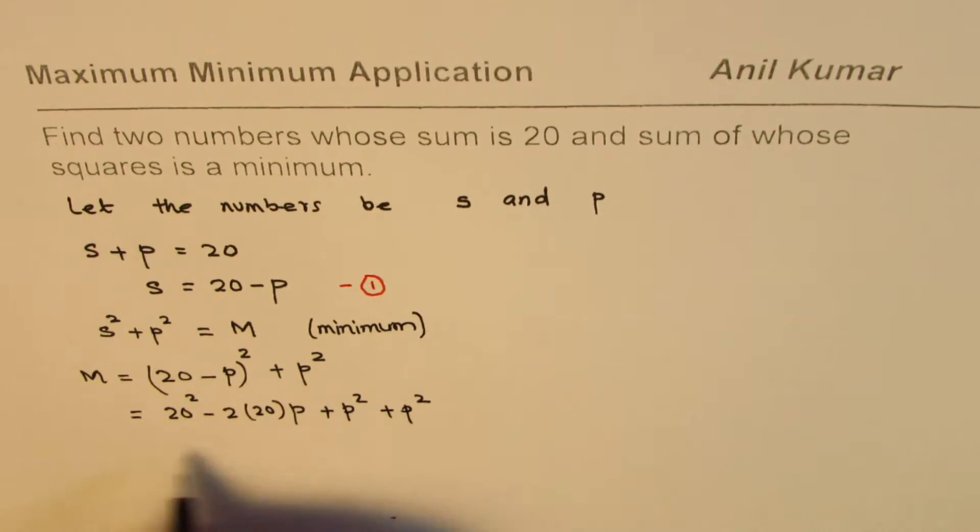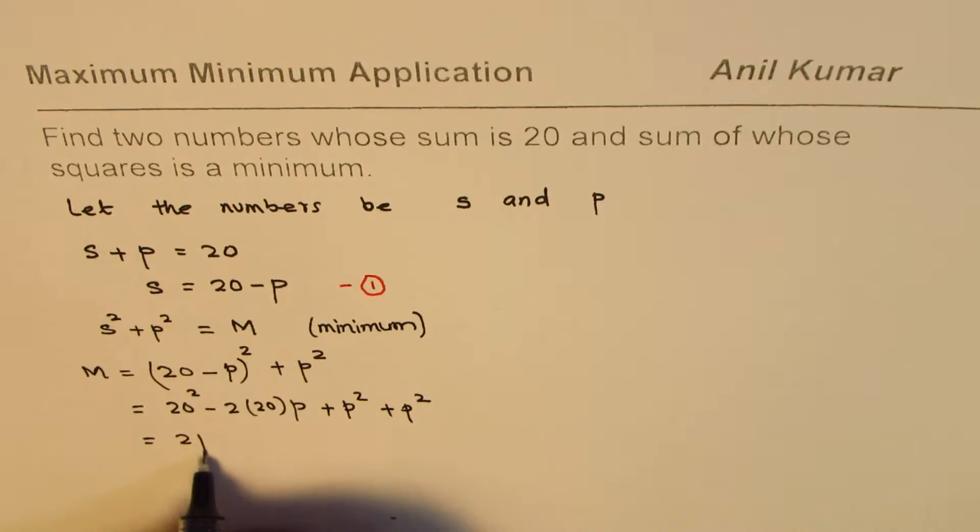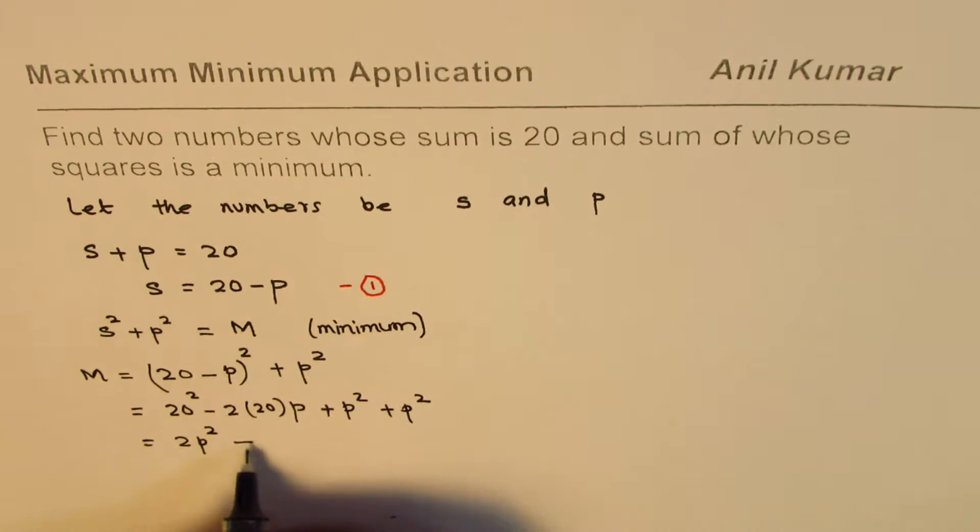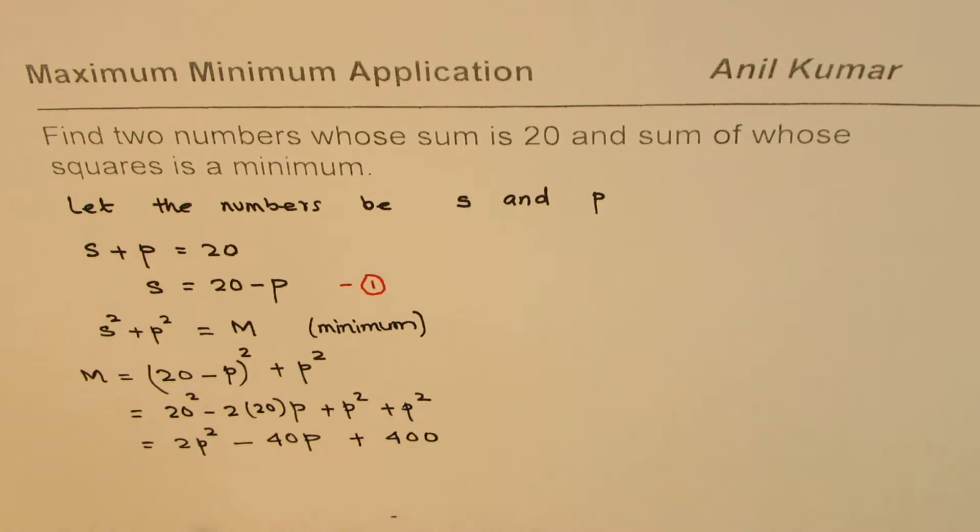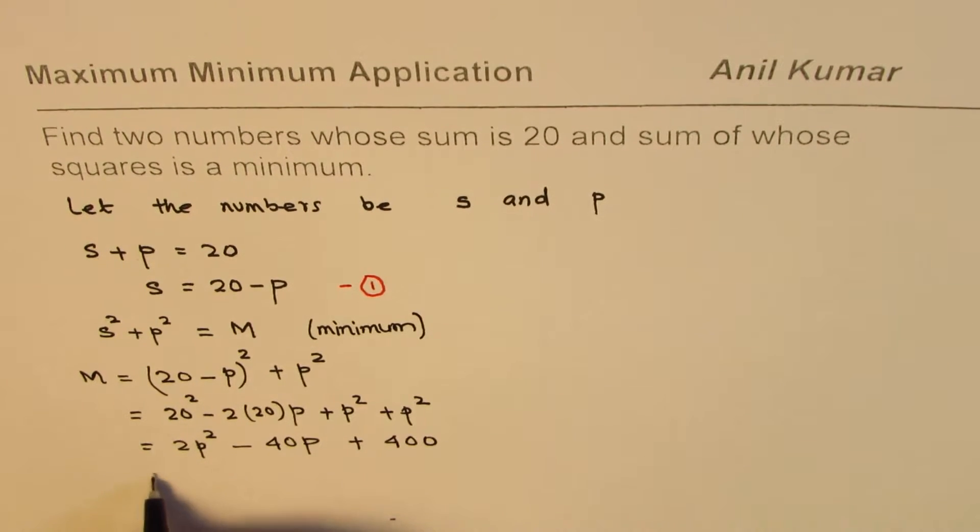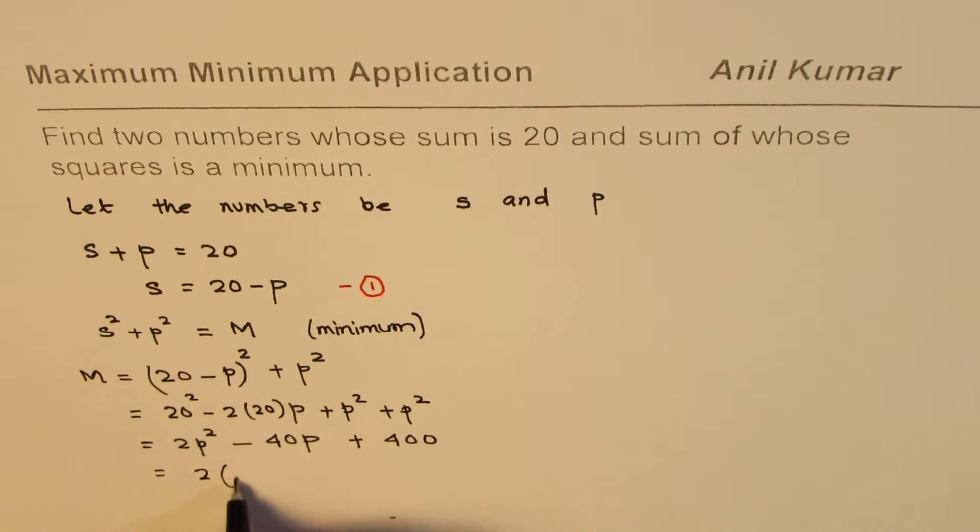If you simplify this we get 2p² minus 40p, and 20² is 400. That is the expression which you get.